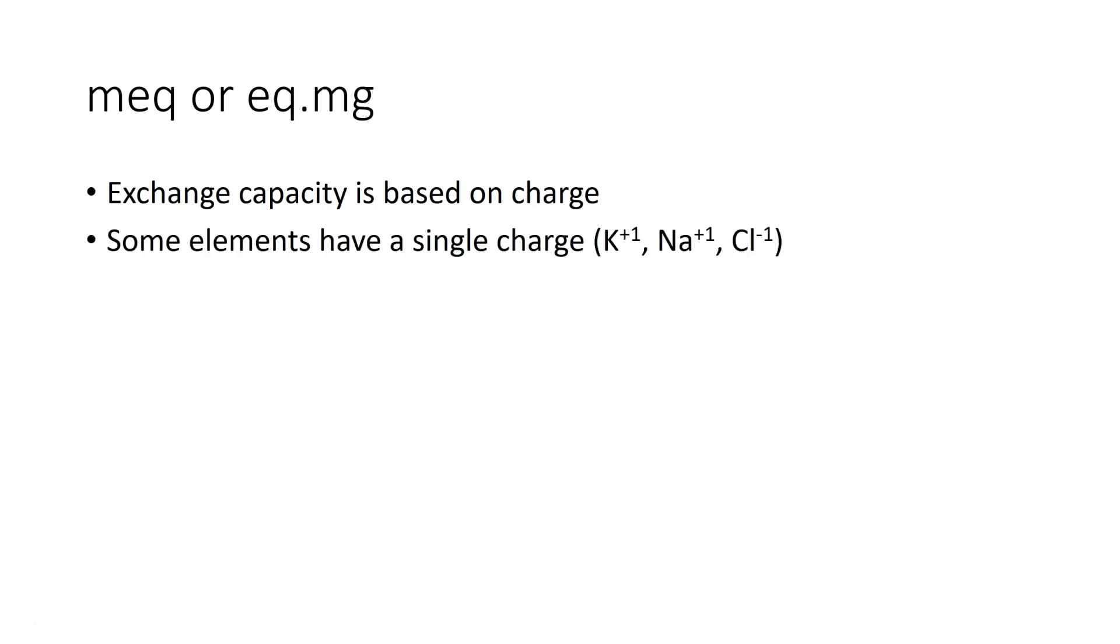They often talk about equivalent milligrams or milliequivalents. Exchange capacity is based on charge. The amount of charge we have is basically what we call the milliequivalents or the equivalent milligrams. Some elements have a single charge: potassium, sodium, chlorine. Some elements have a double charge: calcium, magnesium, sulfate. Some have a triple charge: iron. We've got to know what's going on in here.